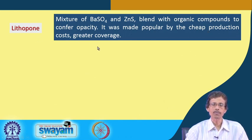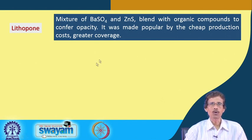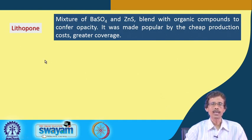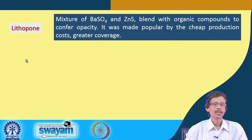Lithopone became popular due to cheap production costs and greater coverage. It is cheaper than titanium dioxide or zinc oxide. For the wet chemical method, cheaply available zinc compounds or metallic zinc from industrial byproducts can be used for making zinc pigments or zinc paints.